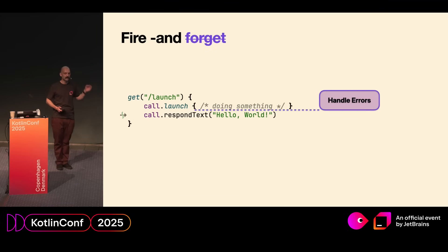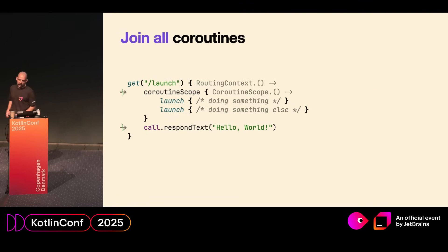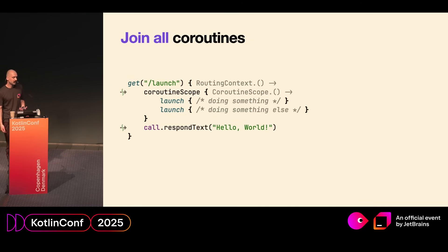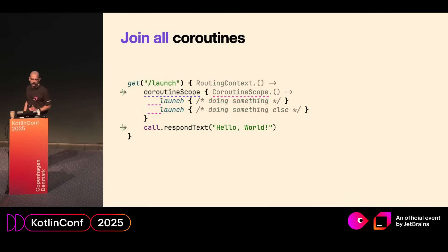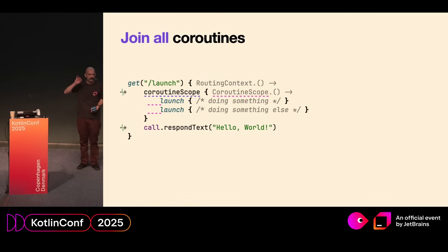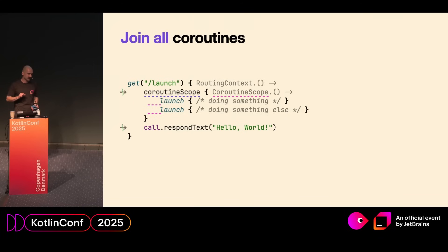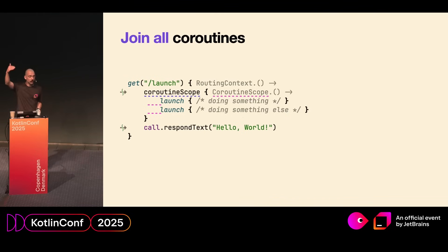So what if you need to launch some coroutines but you want to make sure that all of them are finished before you actually send a response? Well, in that case we can use the coroutineScope function from the Kotlinx coroutines library, which will await all the launched coroutines inside. Here we have the guarantee that our coroutineScope block starts, and all the launched coroutines will have finished before the response is eventually sent to the user. It is very important that you call the launch function on the coroutine scope from the coroutineScope block, and no longer call them on the call property from the routing context, otherwise it will be a child of the coroutine handling the route, not a child of the coroutineScope we explicitly created.